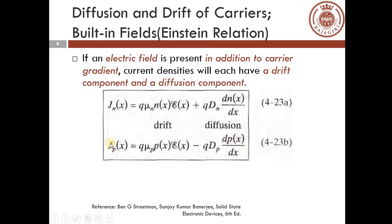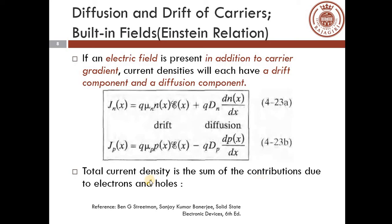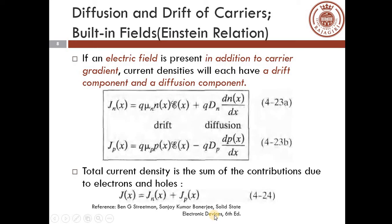Similarly, the total current density due to holes is: Jₚ(x) = q·μₚ·p(x)·ε(x) − q·Dₚ·dp(x)/dx. The total current density is the sum of contributions due to drift and diffusion, and the sum of contributions due to electrons and holes: J(x) = Jₙ(x) + Jₚ(x). The total current density due to electrons has both drift and diffusion components, and the same applies to holes.